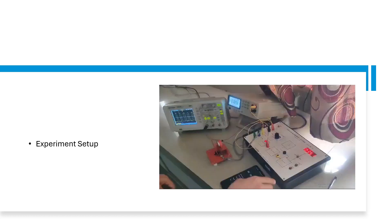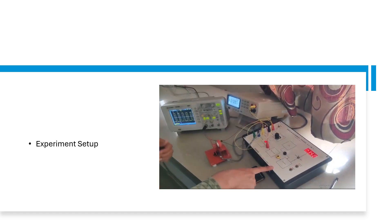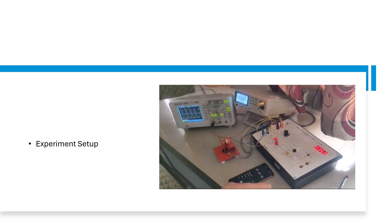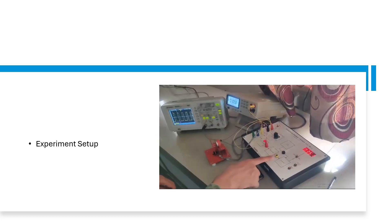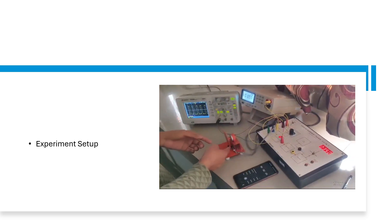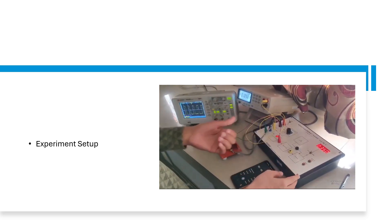So in this slide we will see the experiment video. So let's start the video. This is the speed measurement using the trainer kit. And this is the DC motor. And this is the oscilloscope which generates the output for each pulse. And this is the motor which is getting the power supply from the trainer kit.